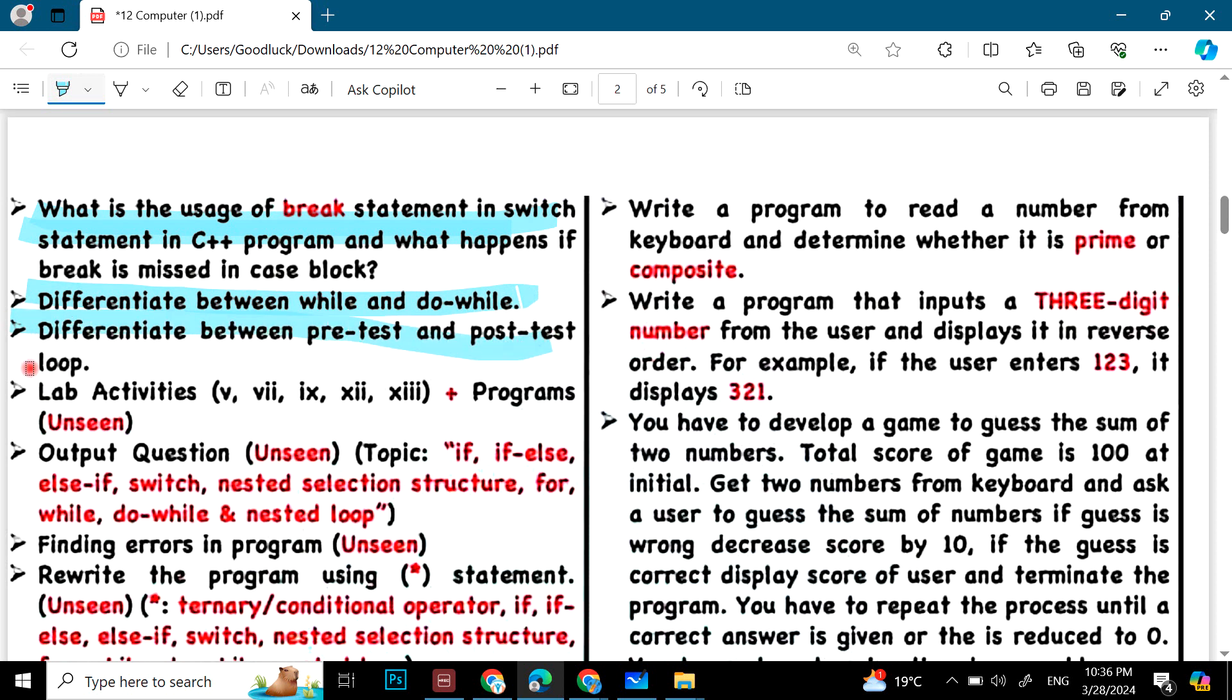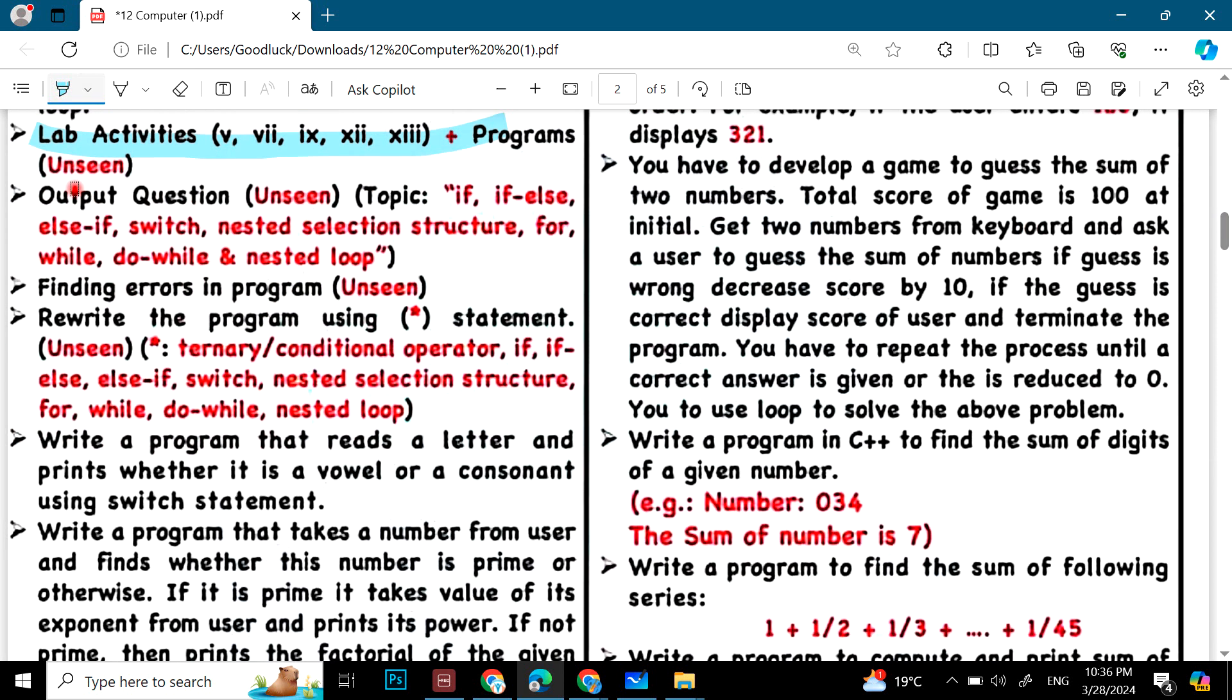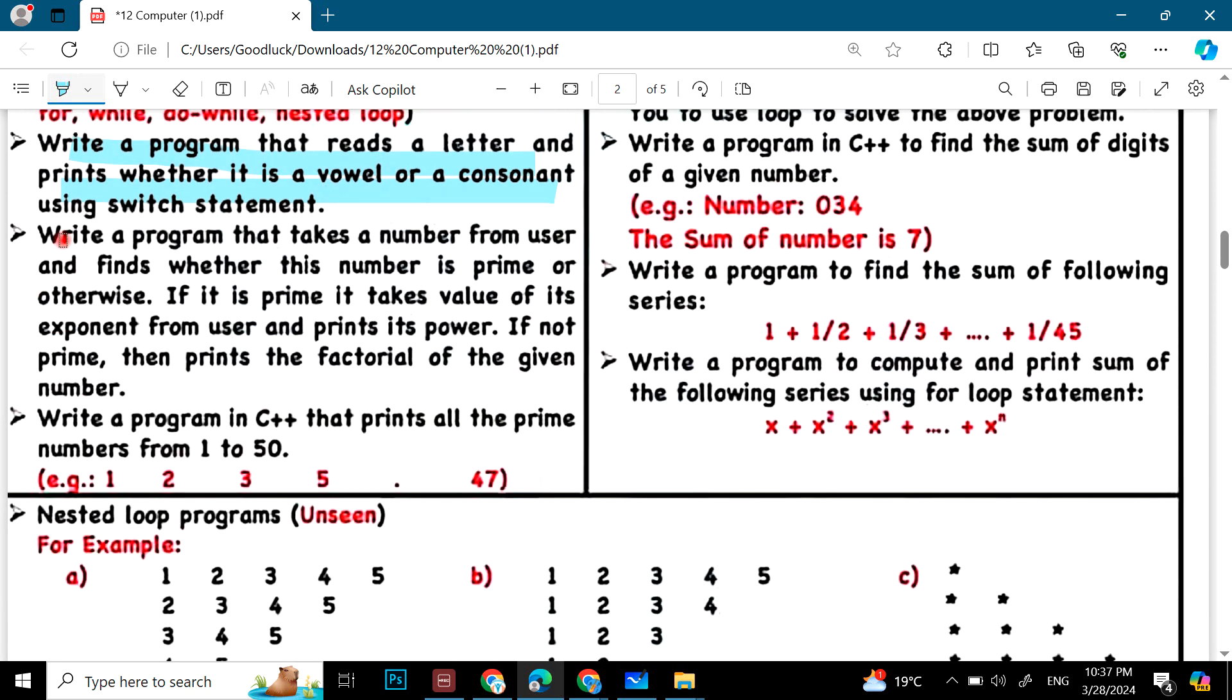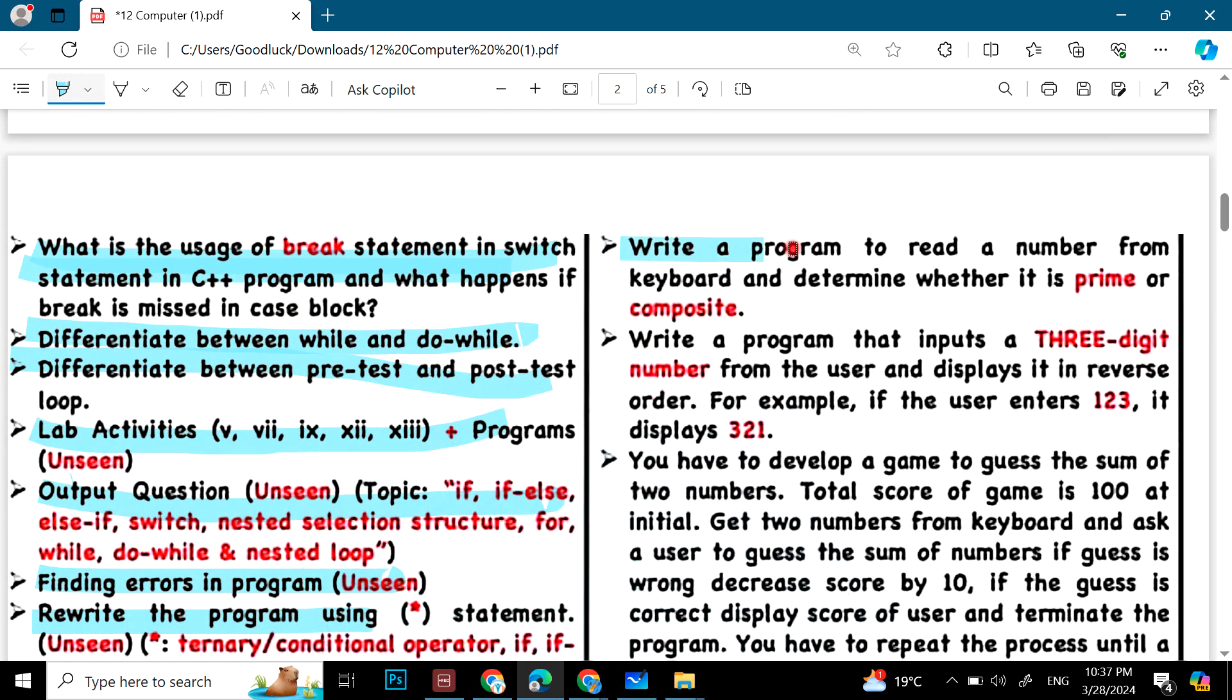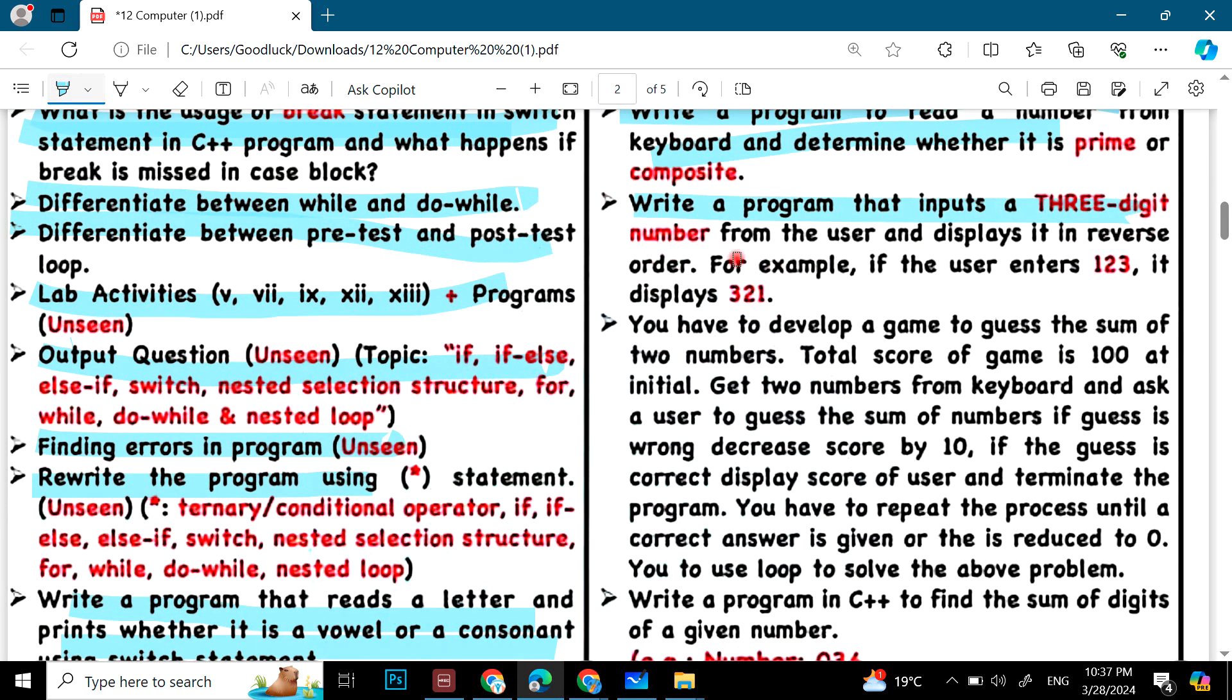Lab activities which you have mentioned. Output questions. Finding errors. Rewrite the program using a start statement. Write a program that reads a letter and prints whether it is a vowel or a consonant. And then we have a write a program that takes a number from user and find whether this number is a prime or otherwise. And then this is a program mentioned. Prime numbers related. Similarly, here on the right hand side of the program that can print prime or composite function, three digit number and these different scenarios. You can practice this before your papers.